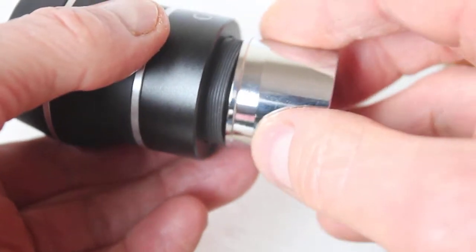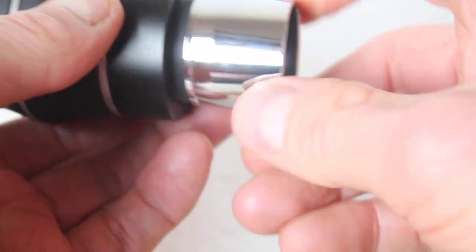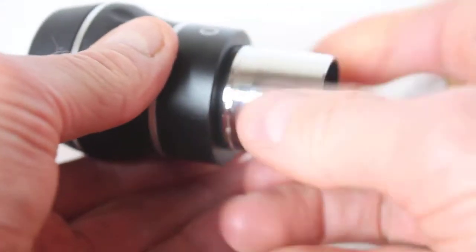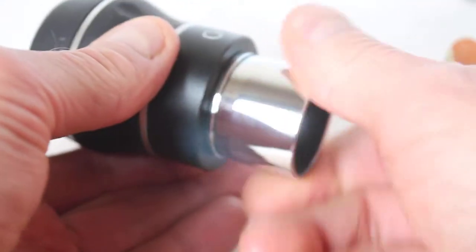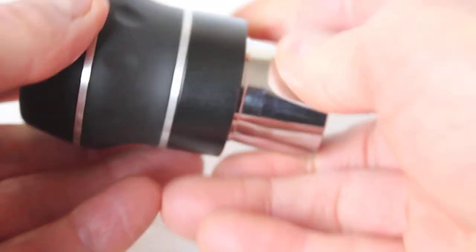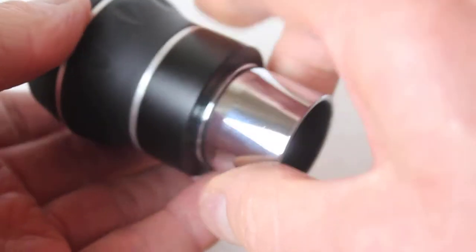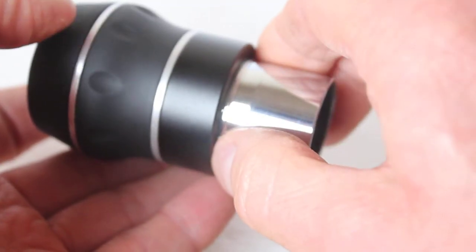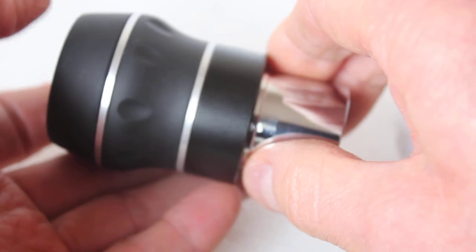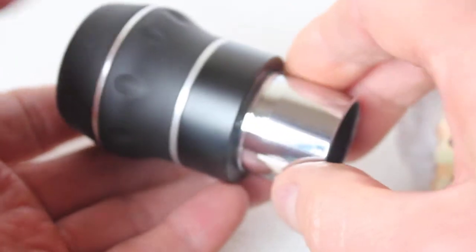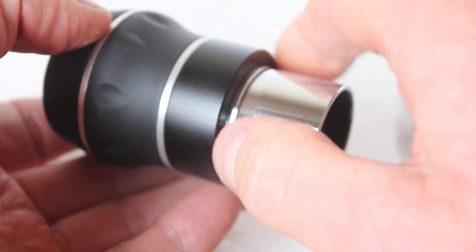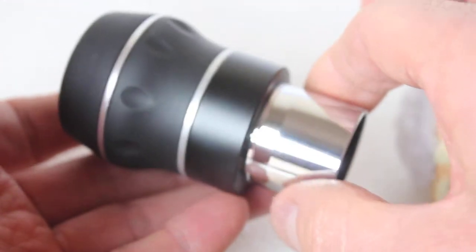With that section all tightened back up again, you have an eyepiece that doesn't rattle. This doesn't apply to all eyepieces. There are some zoom eyepieces and some specialist eyepieces where, as soon as you remove this, you can get yourself in a whole load of trouble with lens elements coming out.